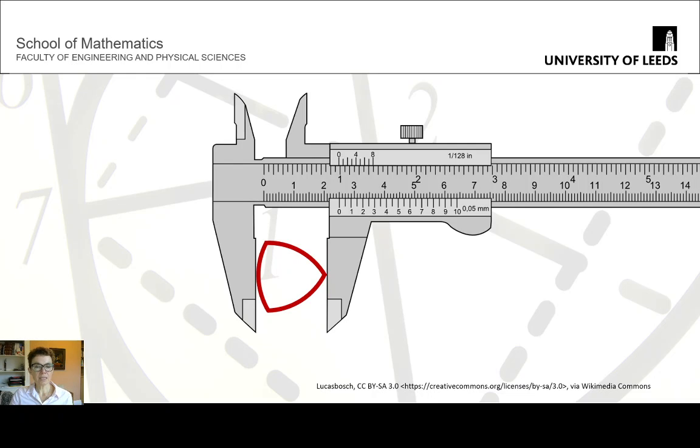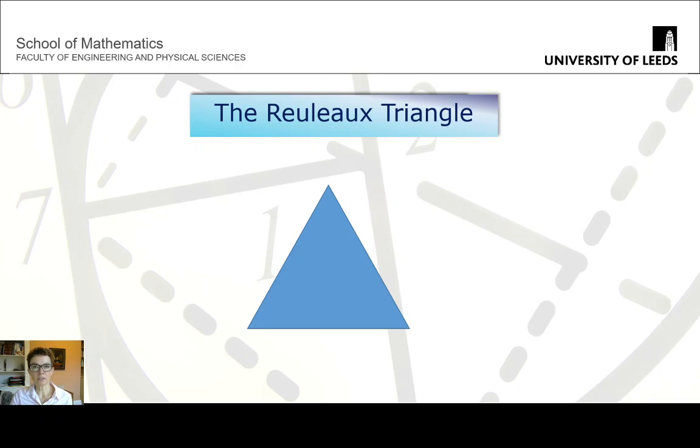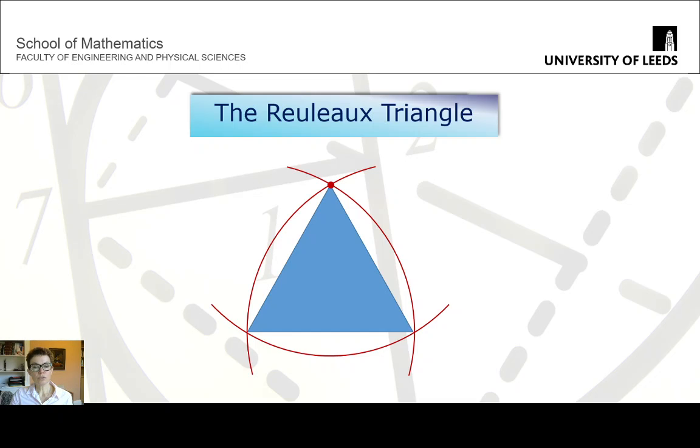What this object is that is in our caliper there on the screen is what is called a Reuleaux triangle. I'm just going to briefly go through what it actually is, or how it's constructed. You start with a nice equilateral triangle, like here in the picture, all sides have the same length, in our case we'll call it a, and all angles are the same, 60 degrees. And what you do then is you draw circular arcs of radius a over each of the sides. You draw these three circular arcs, they intersect at the corners, you take the triangle away, and you end up with a Reuleaux triangle.